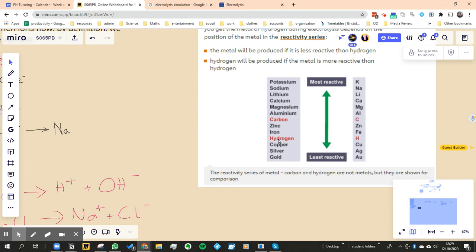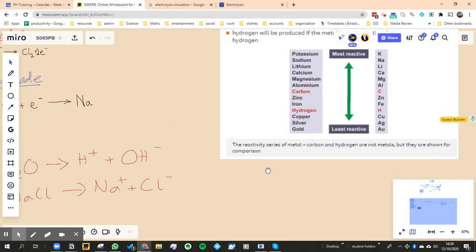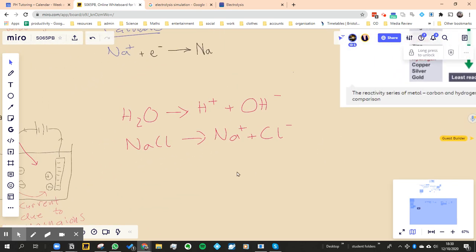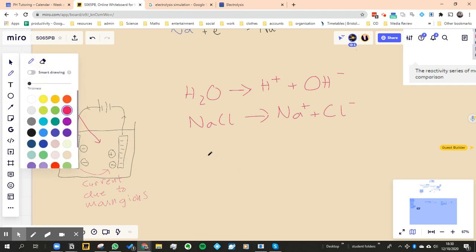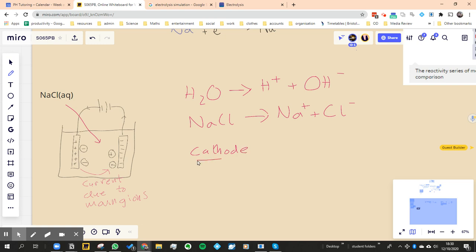then what would happen is the hydrogen would go to the electrode, to the cathode. So the positive hydrogen would go to the cathode. So the reaction at the cathode would be this: H plus, plus an electron, goes to hydrogen gas, and then we balance it. So 2H plus plus two electrons goes to H2.